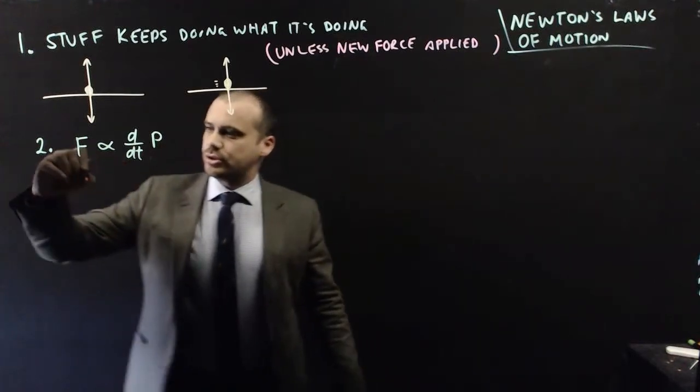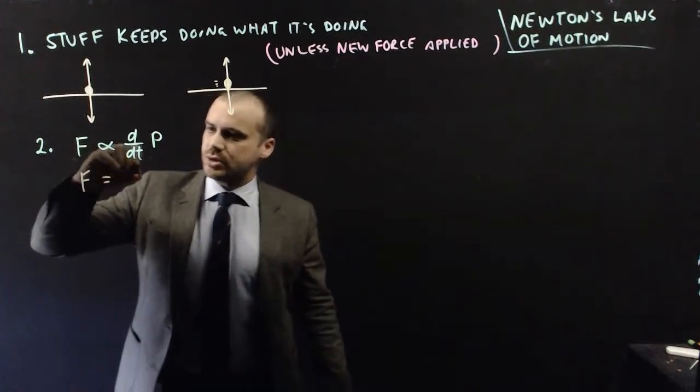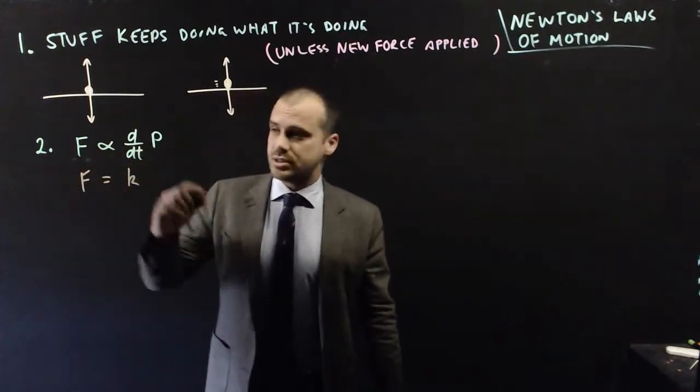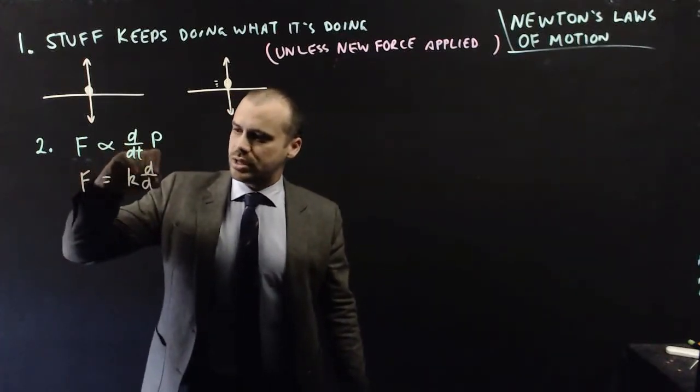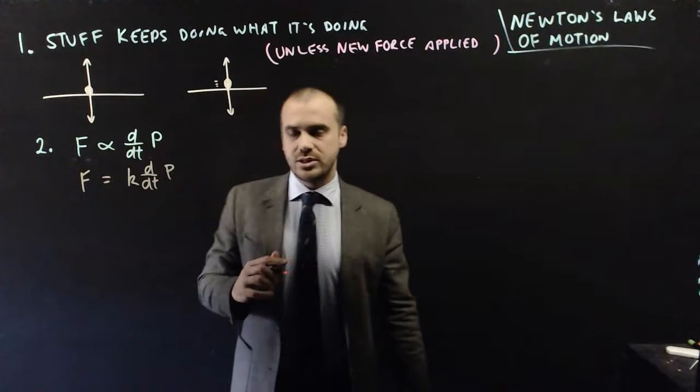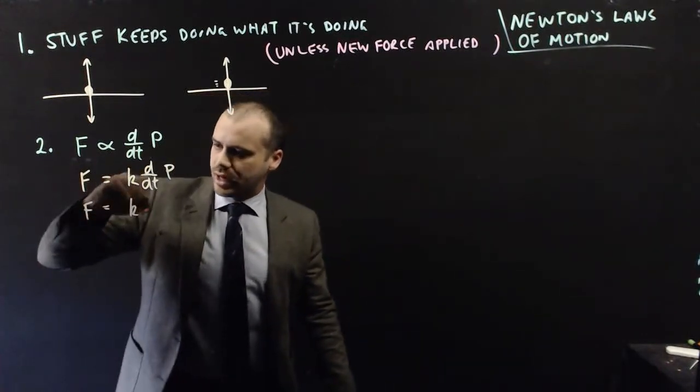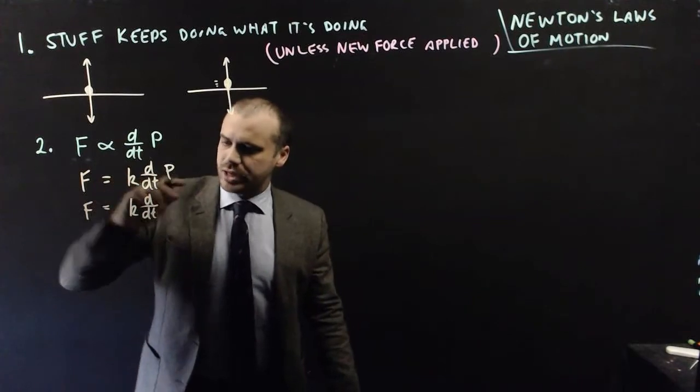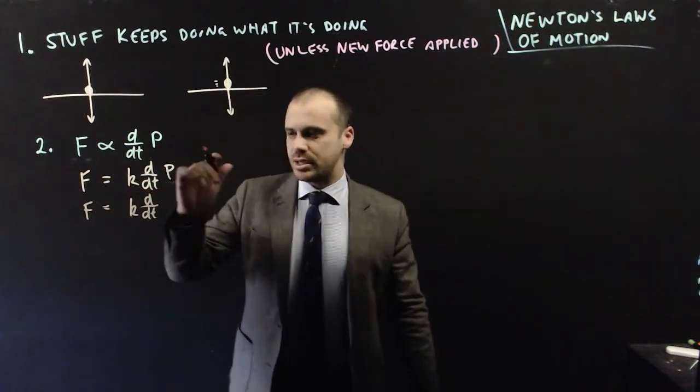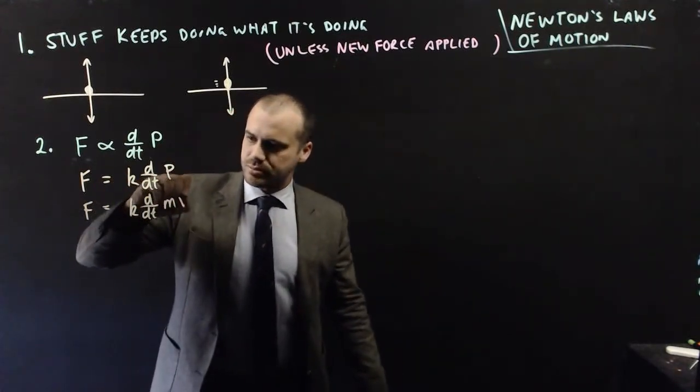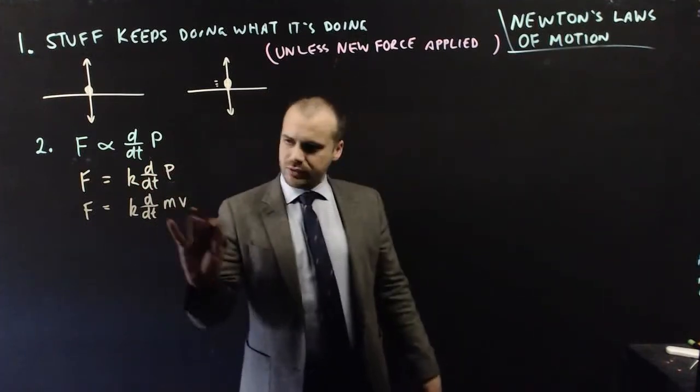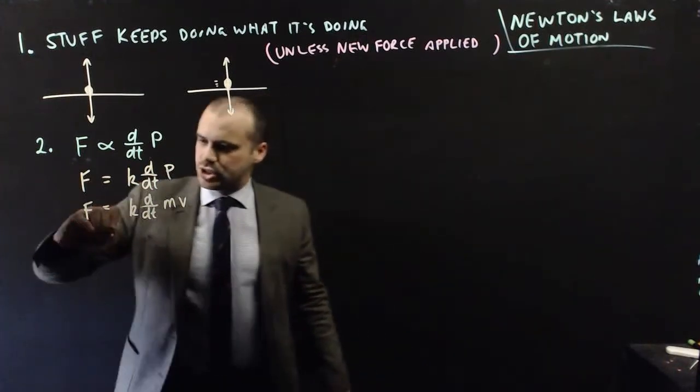And when we follow this through to its conclusion, we get that the force is equal to some constant k times the change in momentum. And then we can also say that force is equal to k, and then the rate of change of momentum is equal to mass times velocity. Now, given the mass of an object doesn't change, the derivative of mv - we can move that m, because m is a constant, out here.